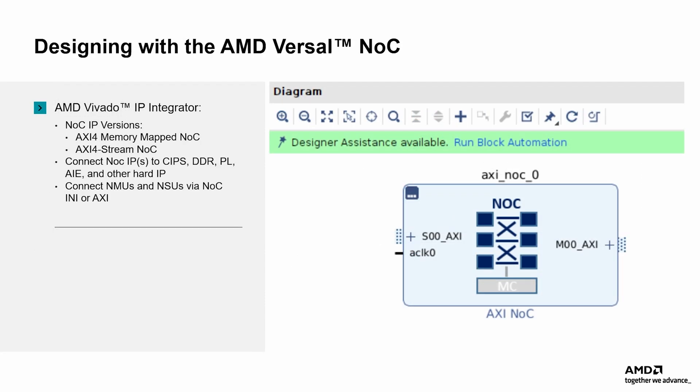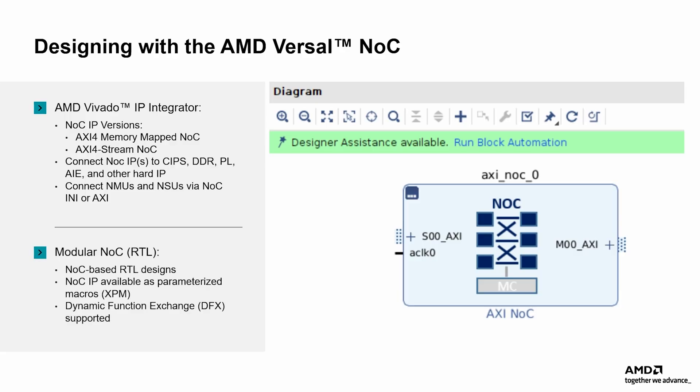The AMD Versal NOC can be accessed using Vivado IP integrator or the modular NOC RTL-based workflows. Two versions of the Versal NOC IP exist: AXI memory mapped or AXI stream interfaces. Connect the NMUs and NSUs to the PL or other Versal hard IP. For modular NOC, access the NOC IP using parameterized macros, XPM. For users implementing Dynamic Function Exchange, DFX, please note that DFX is only supported by the modular NOC flow.